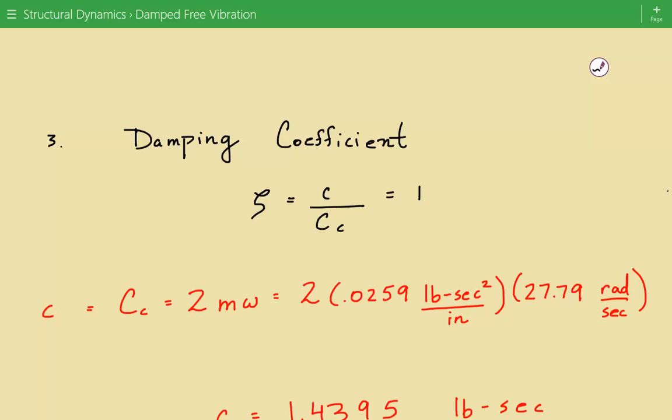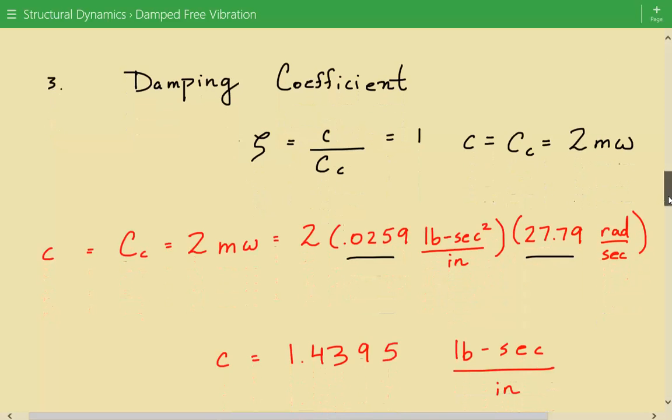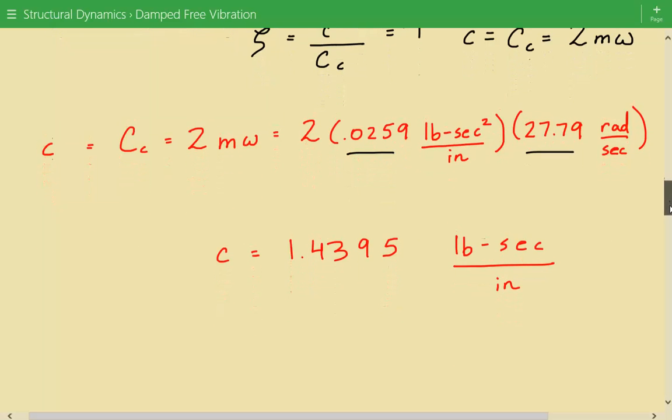we can say that c, the damping coefficient c, equals the critical damping constant c sub c. The critical damping constant equals 2 times mass times omega. So we can easily calculate the damping coefficient. It's going to be equal to 2 times the mass times omega, the undamped circular natural frequency. So our damping coefficient is equal to 1.4395 pounds second per inch.